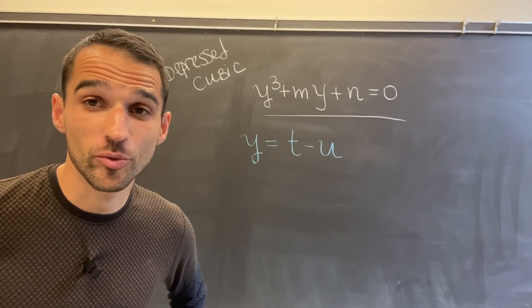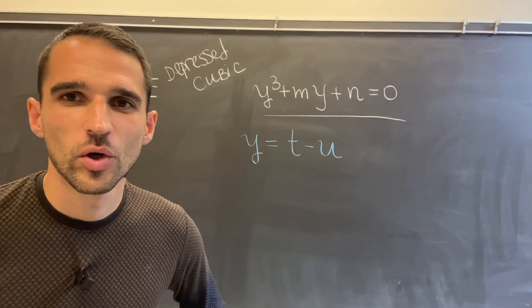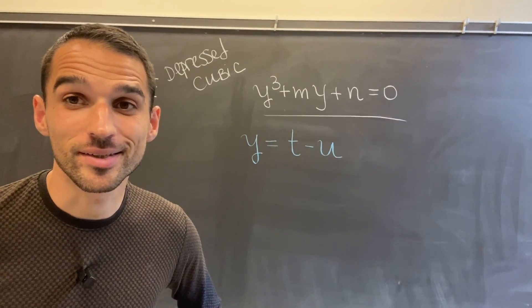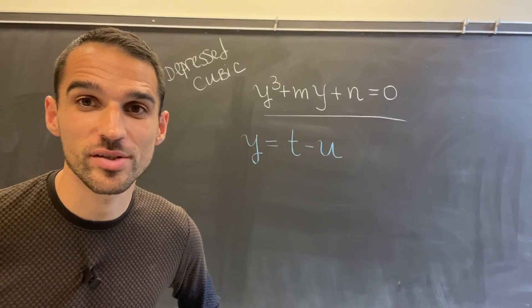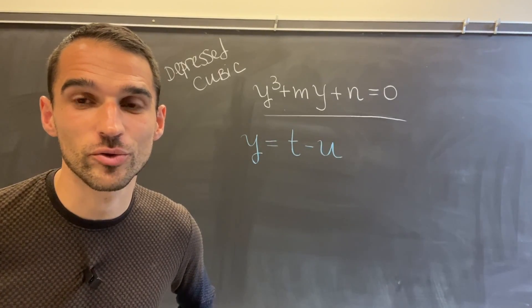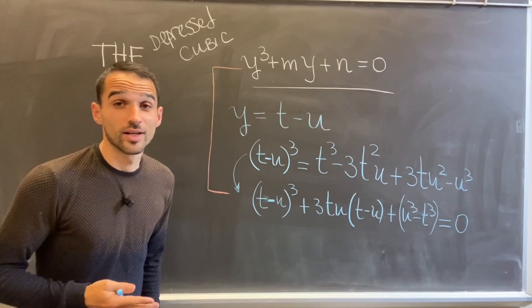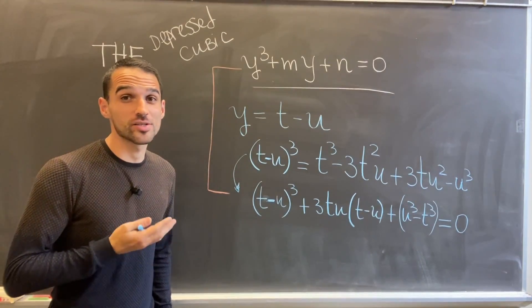So how to solve depressed cubic equations? This is indeed the most difficult part here. We can replace y with a difference of two other variables. So this is counter-intuitive because seemingly we make the problem more complicated, right? We introduce one extra variable. So what is the benefit?